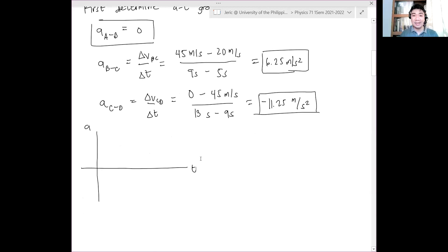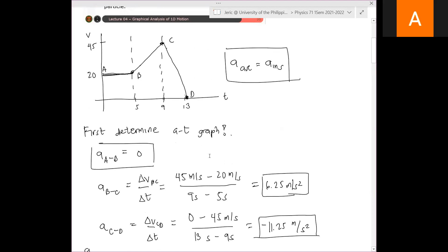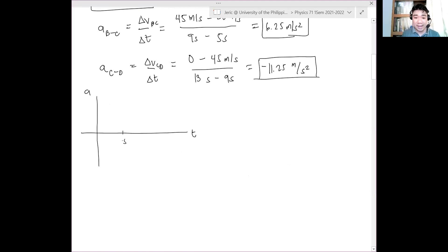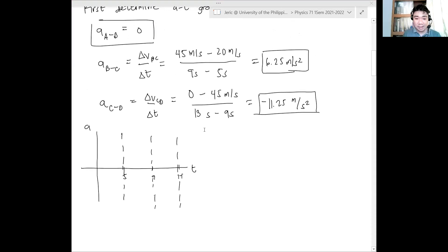How do you plot your acceleration-time graph? We know that we divided it into different regions. Therefore, we'll divide the acceleration-time graph at the same regions: at t equals 5, at t equals 9, and at t equals 13. We'll divide it like that.